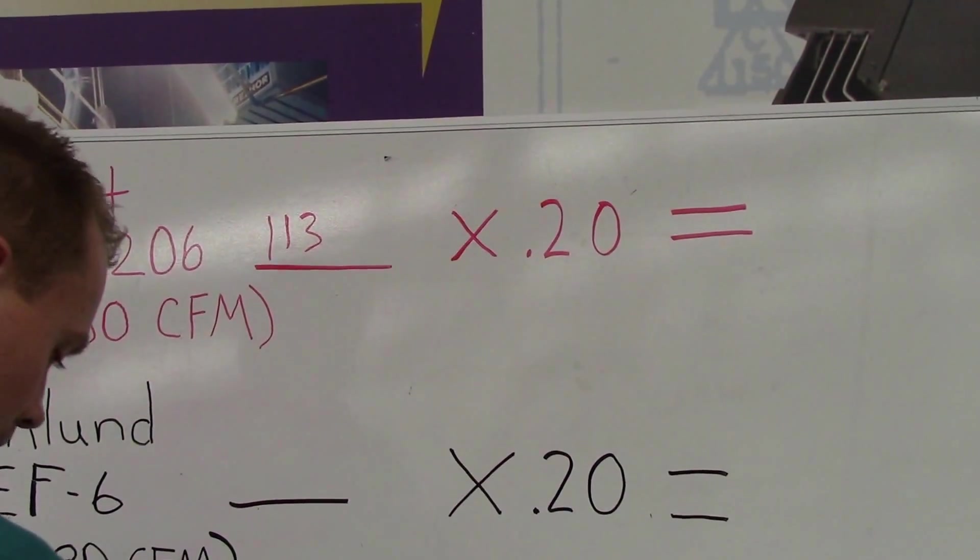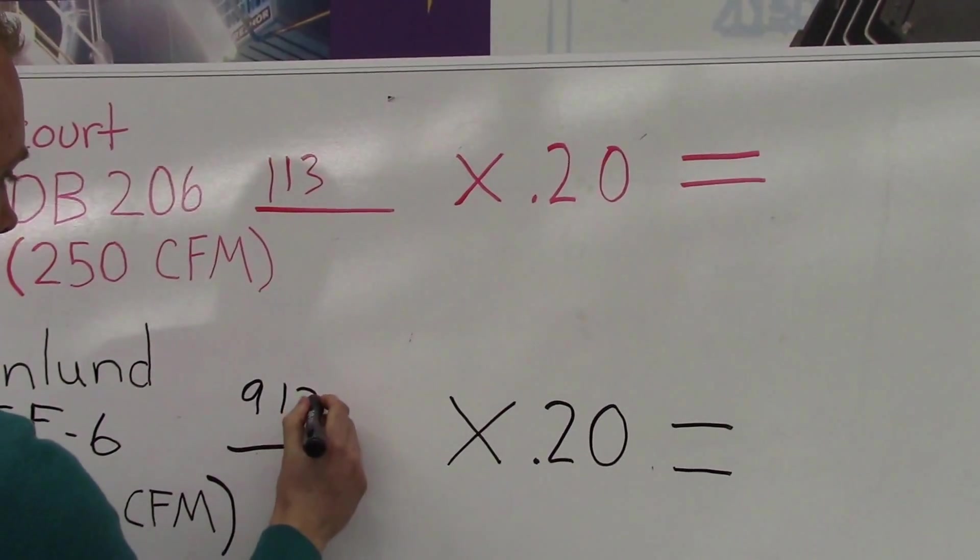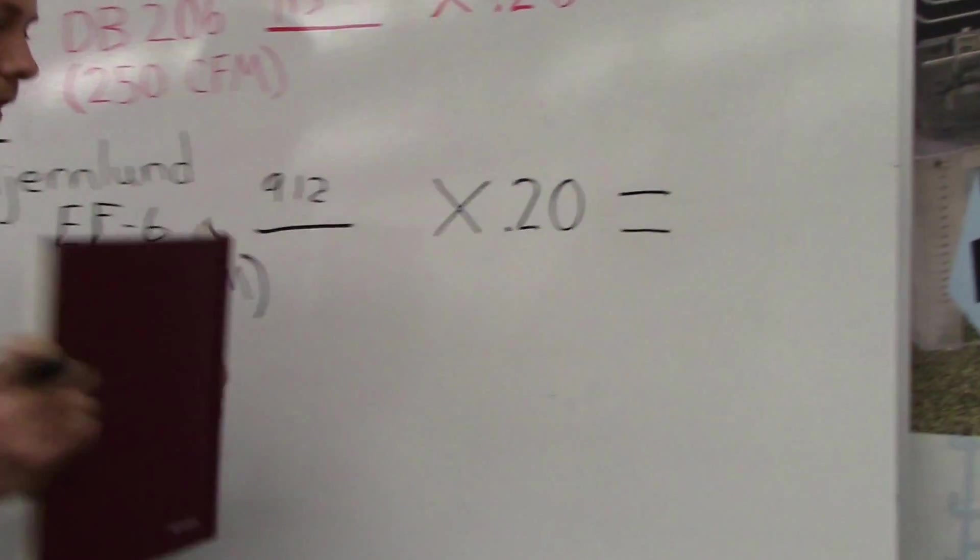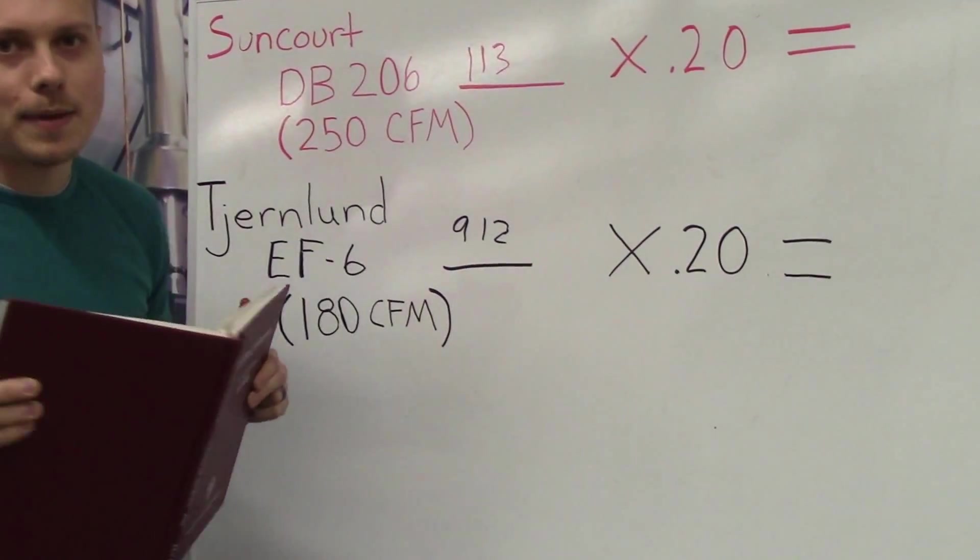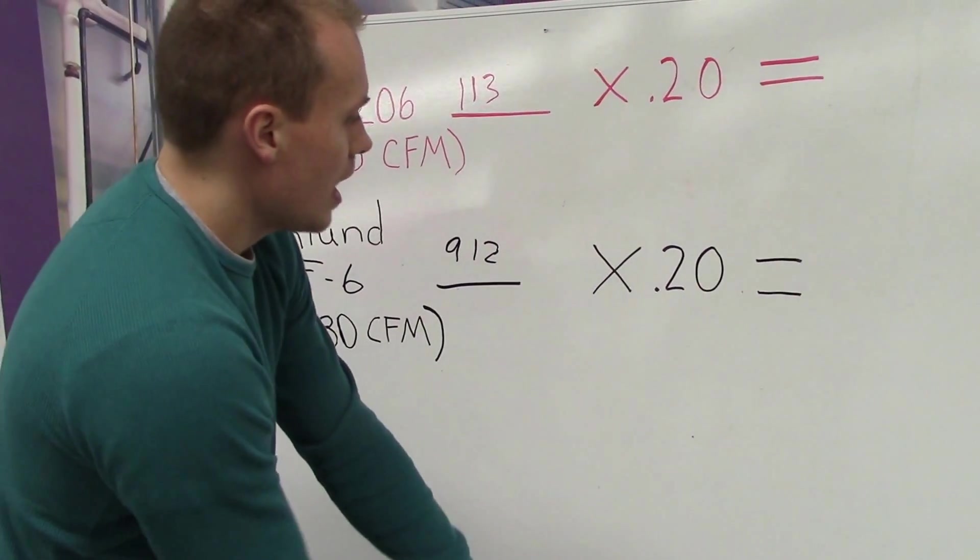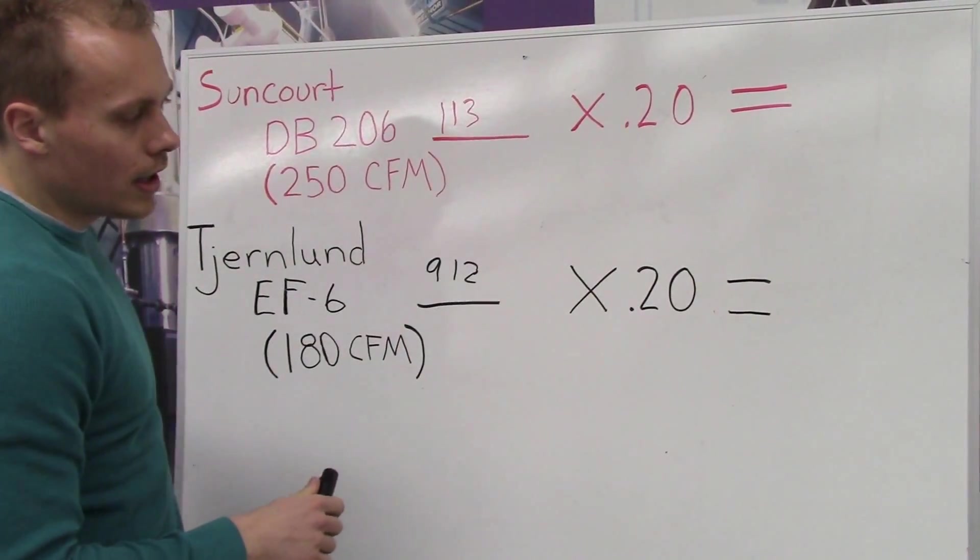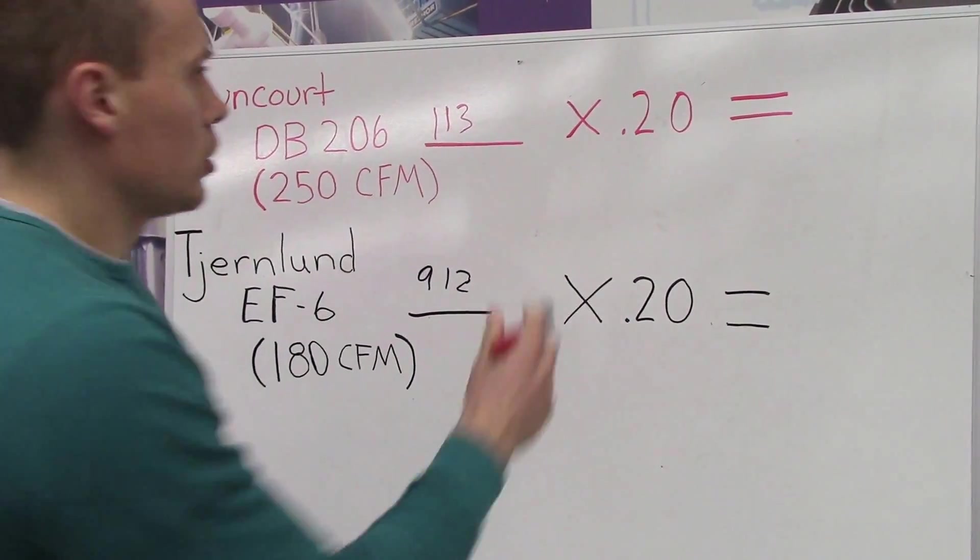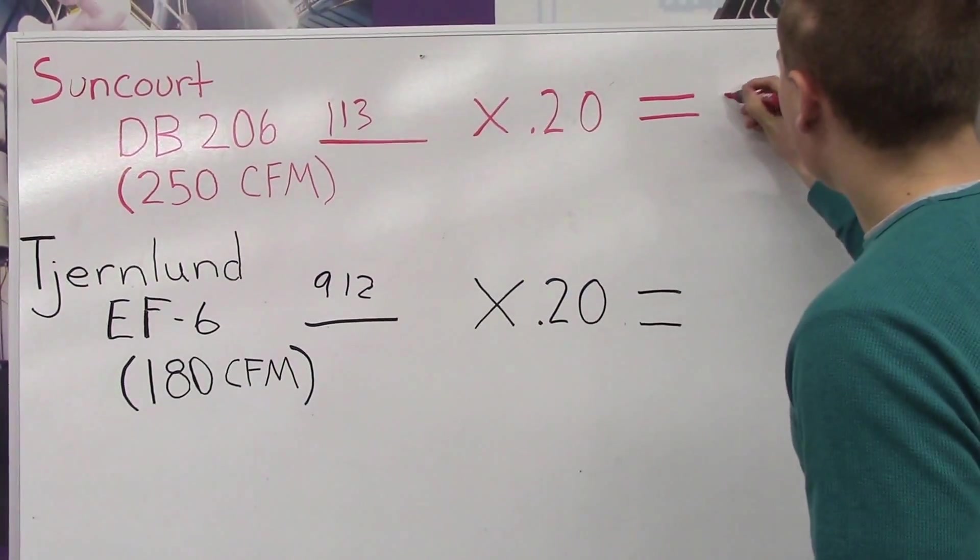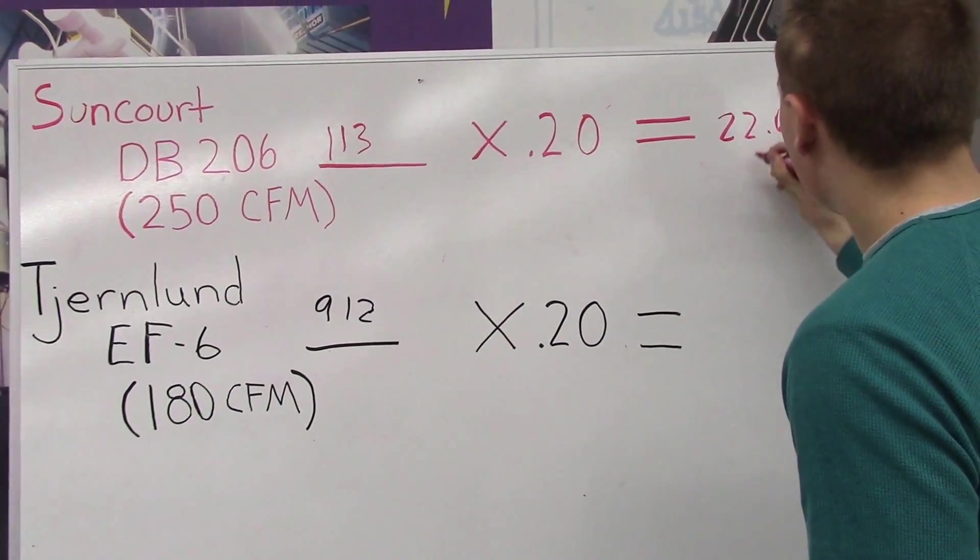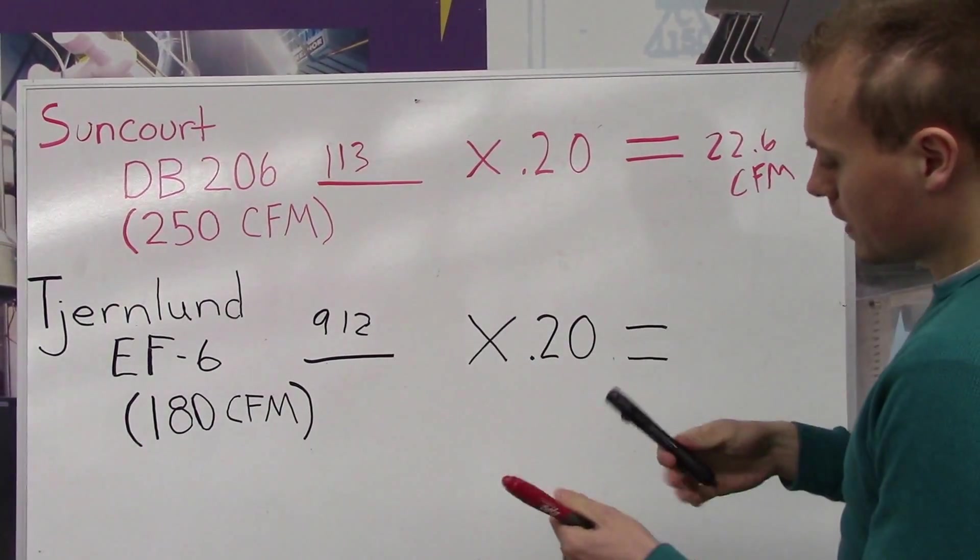113 and I've got 912. Now according to a lot of the formulas out there, you basically multiply these numbers, this velocity for 6 inch pipe, times 0.2 to get your actual CFM. So if you do times 0.2 here, you end up with 22.6 CFM, and you multiply this times 0.2, and you end up with 182.4 CFM.